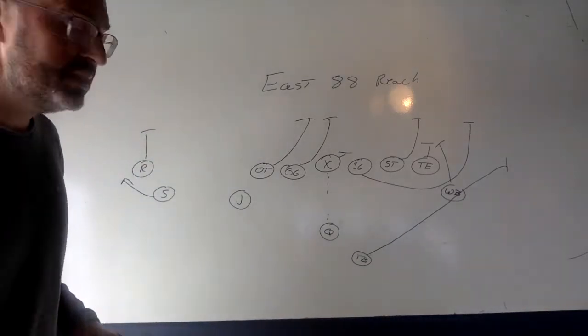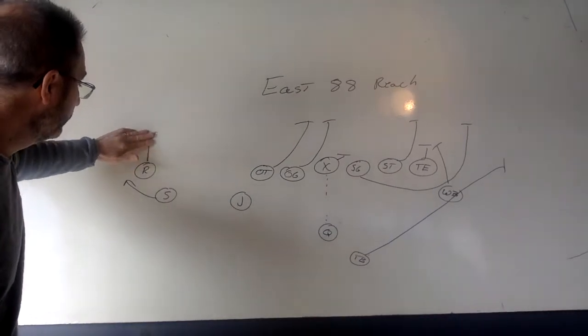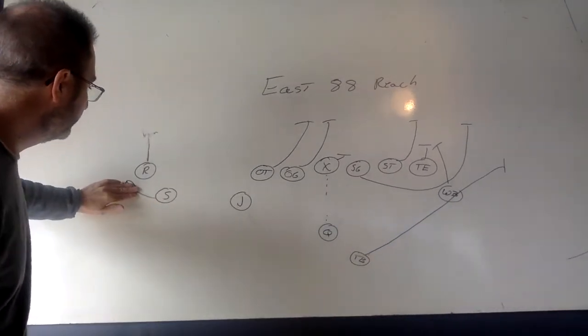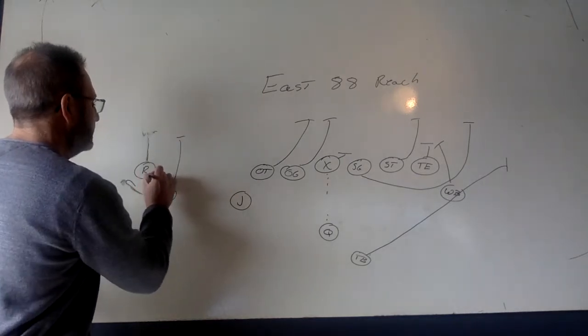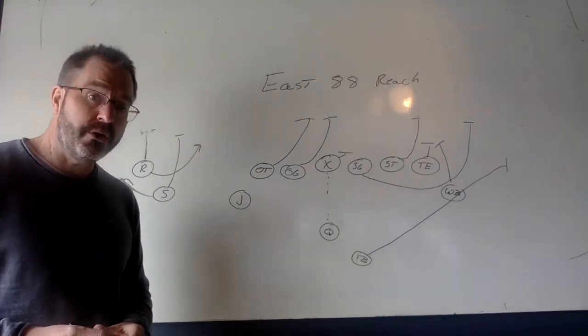But we are going to put another change onto it. Where, instead of running the bubble, we may have the slot come up and block. And the receiver slip underneath, which is called a tunnel.